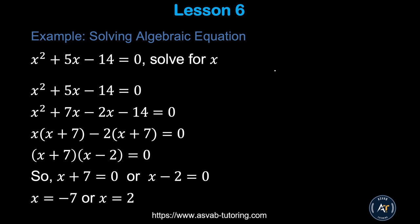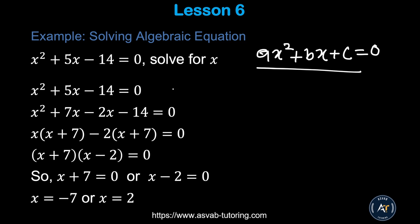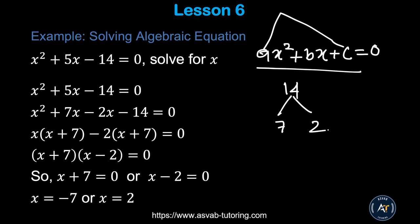Now we'll learn how to solve a quadratic equation — an equation in the form ax² + bx + c = 0. From a previous lesson you learned how to factorize. The first step is to factorize the left side. You need to multiply a by c, then split the middle term into two parts that multiply to give a·c and add to give b.